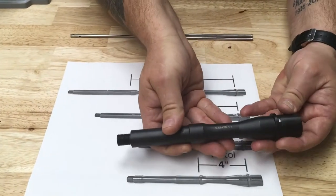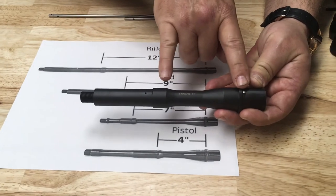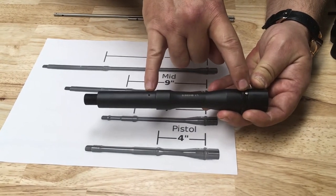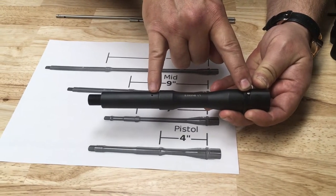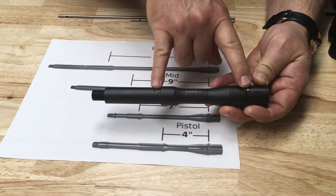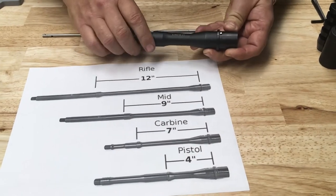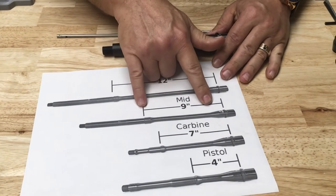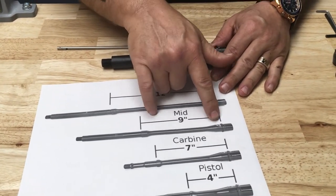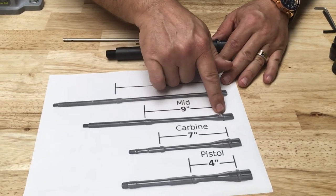What that measurement is is the distance from the flange to the gas port. If it's four inches, you have a pistol system and you'll need to order a pistol length gas tube. If it's nine inches, it's a mid-length gas system and you need to order a mid-length gas tube.